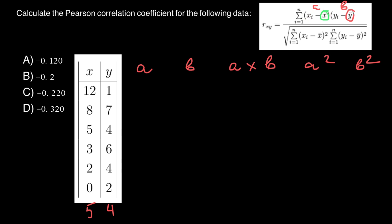According to the formula, we have to take the numbers from column X and subtract the mean of X, which we found is five. So: 12 minus 5 is 7, 8 minus 5 is 3, 5 minus 5 is 0, 3 minus 5 is negative 2, 2 minus 5 is negative 3, and the last value gives us negative 5.